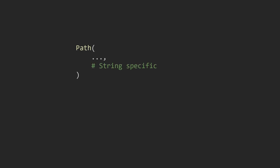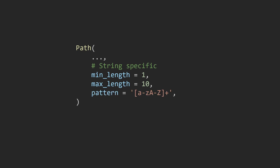Now we'll get into some string-specific validations. First we can use the min_length argument to ensure a string has a minimum character length. Next we can use max_length to make sure strings are not longer than a certain character length. With both min_length and max_length set, whatever string we pass in has to be between 1 and 10 characters. We can also use the pattern argument to match the string against a regex expression — in this case matching only alpha characters, a–z lowercase and a–z uppercase, with at least one character. The regex argument does the exact same thing as pattern.